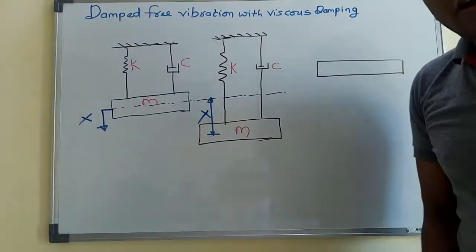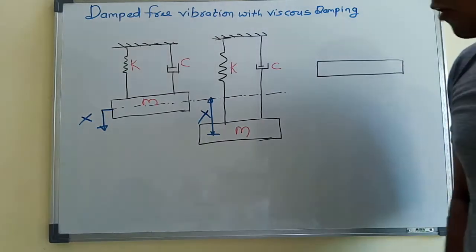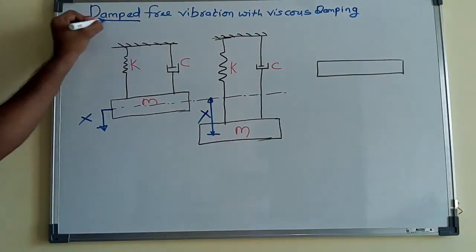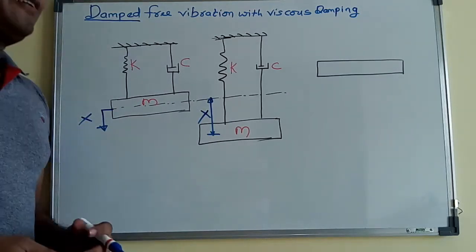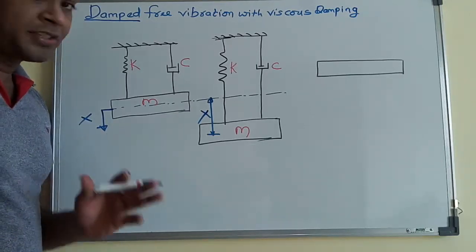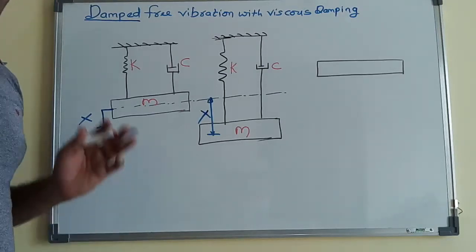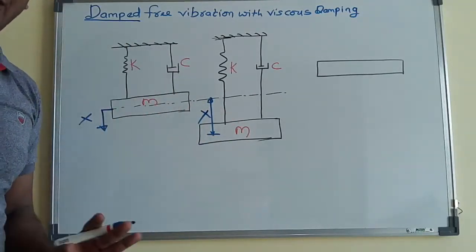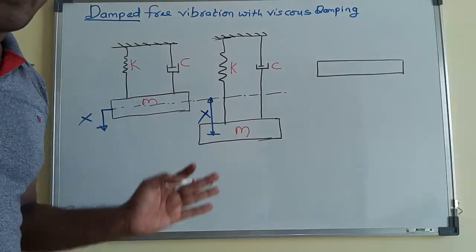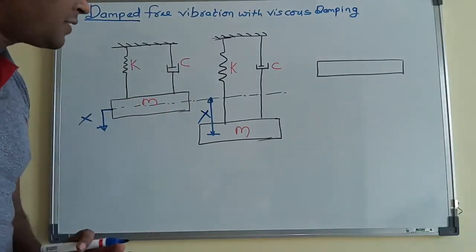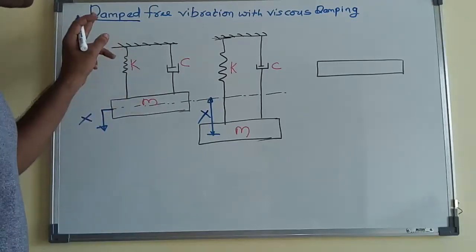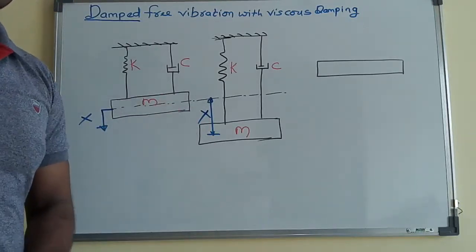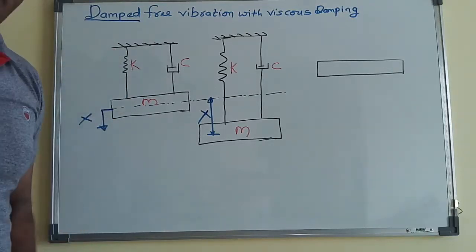Today we are going to see about a topic called damped free vibration with viscous damping. First, let's look into the concept of damping. When any system oscillates or vibrates and you want to bring that system to rest, you have to apply some resistance to the motion of the oscillating body. That resistance is applied by means of a device called a damper. The resistance to the motion of the oscillating body is called damping, and the device that provides the damping is called the damper.